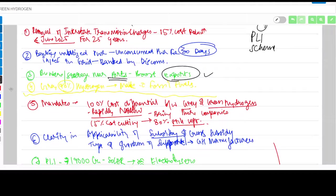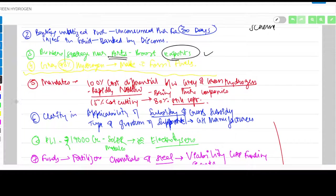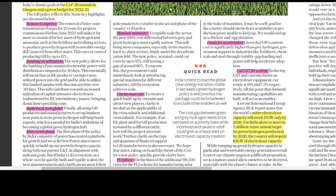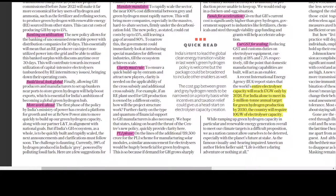The fourth point is about gray hydrogen. In India, 98% of hydrogen produced is gray hydrogen, which is very important for prelims. Gray hydrogen is made from fossil fuels, meaning there's no great benefit in producing gray hydrogen because it's still powered by polluting fossil fuels.